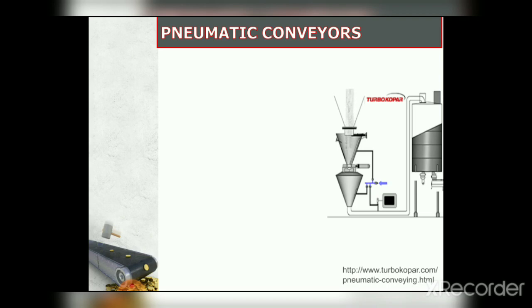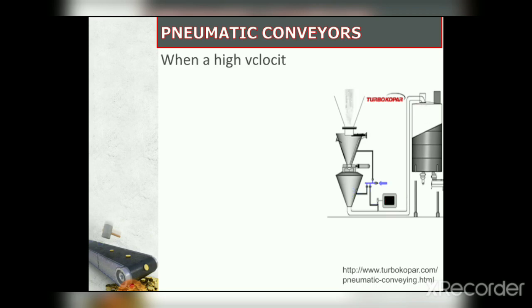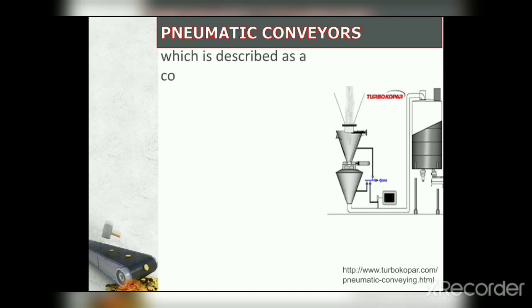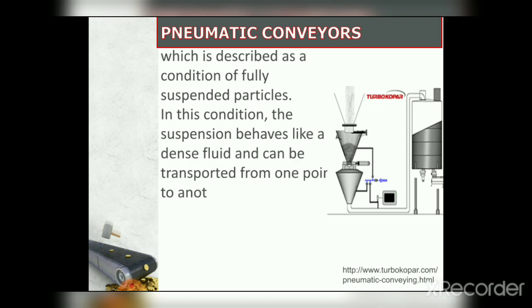The third type is the pneumatic conveyor. Its basic elements are: air supply (vacuum system), air slide and pipeline, feeding arrangement, and discharge arrangement. The main principle is that when high-velocity air is passed through a bed of solid particles, the individual particles are dragged by the air and suspended — a condition known as a fluidized bed. In this condition, the suspension behaves like a dense fluid and can be transported from one portion to another in processing plants.